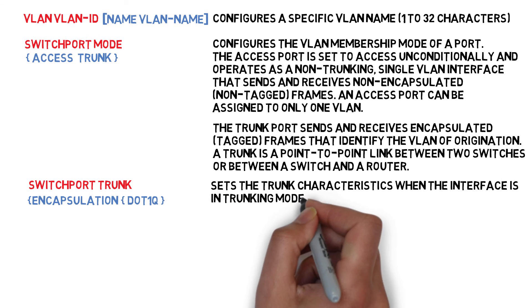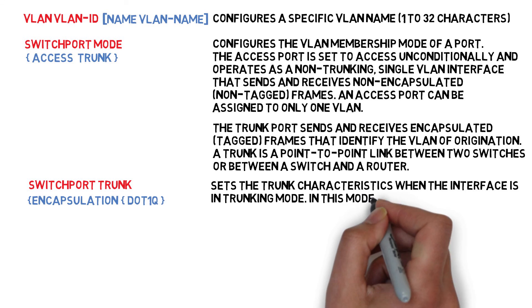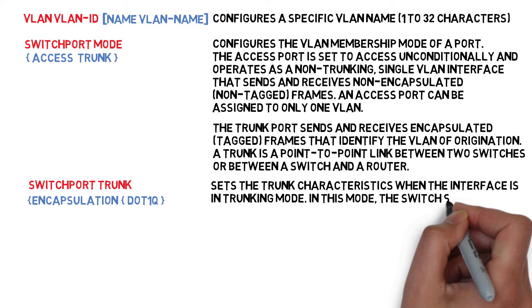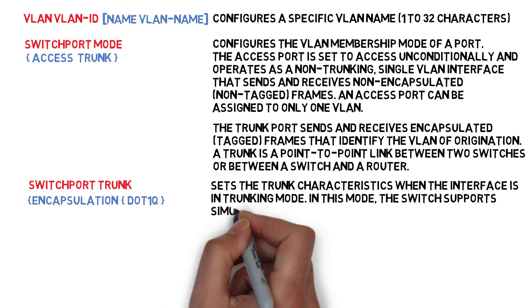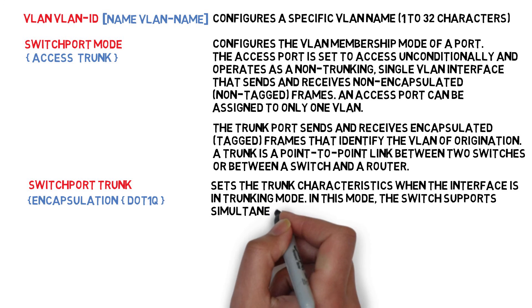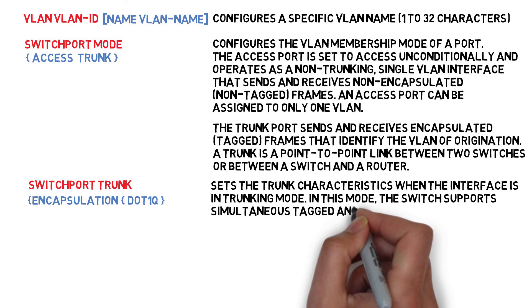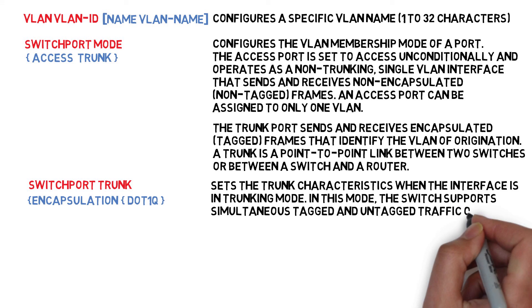Switchport trunk encapsulation .1Q — sets the trunk characteristics when the interface is in trunking mode. In this mode, the switch supports simultaneous tagged and untagged traffic on a port.